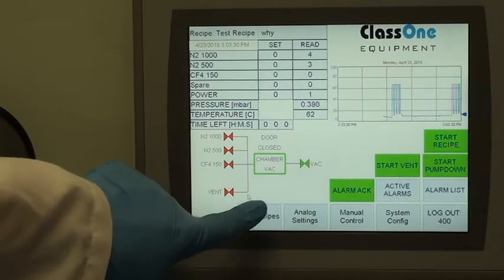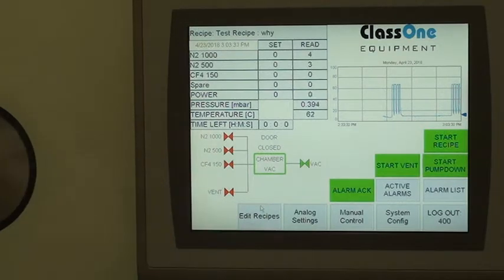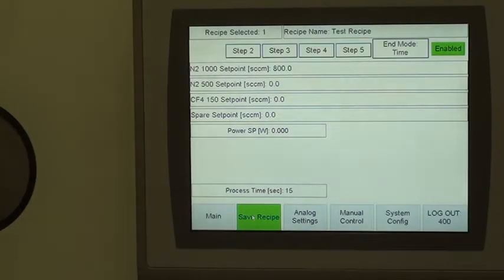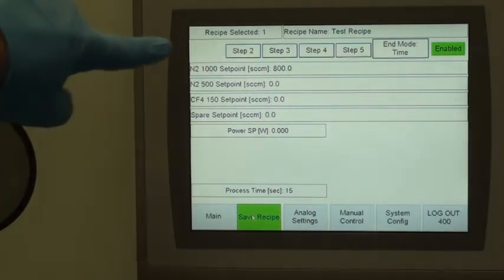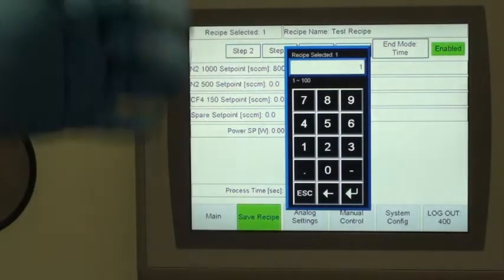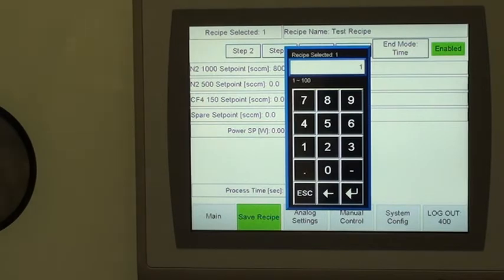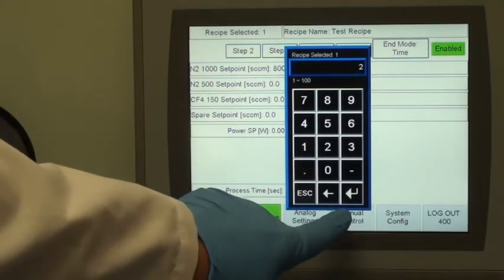You can edit recipes. Here's where you would write your recipes. You would select whichever number of recipe you want: recipe one, two, three, four. And you can write a recipe. So I can say recipe two. Enter.